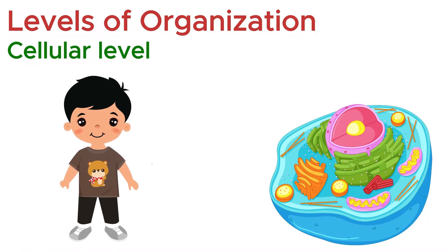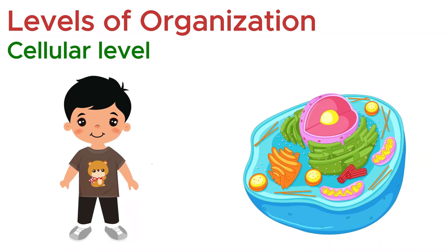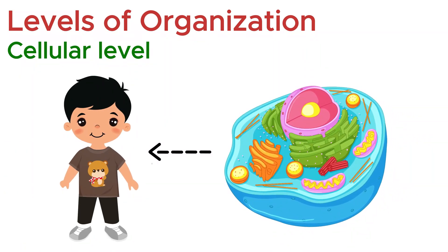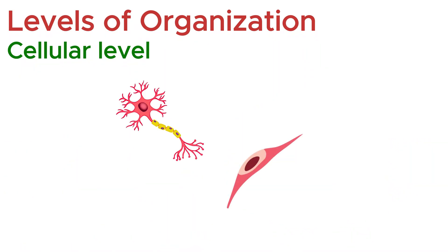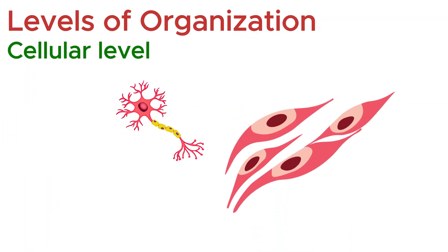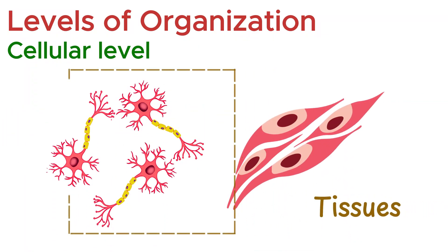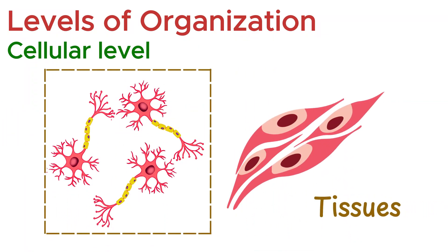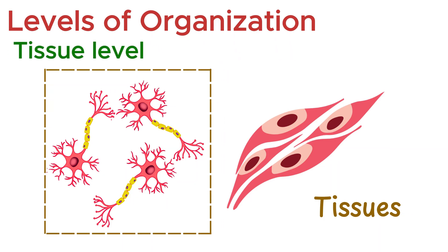Human life is complex — can a single cell do it all? Absolutely not. That's why cells team up, forming tissues: groups of similar cells working together for a common purpose. The tissue level is the second step in the hierarchy of biological organization. Here, cells are arranged in specific patterns to perform particular tasks.